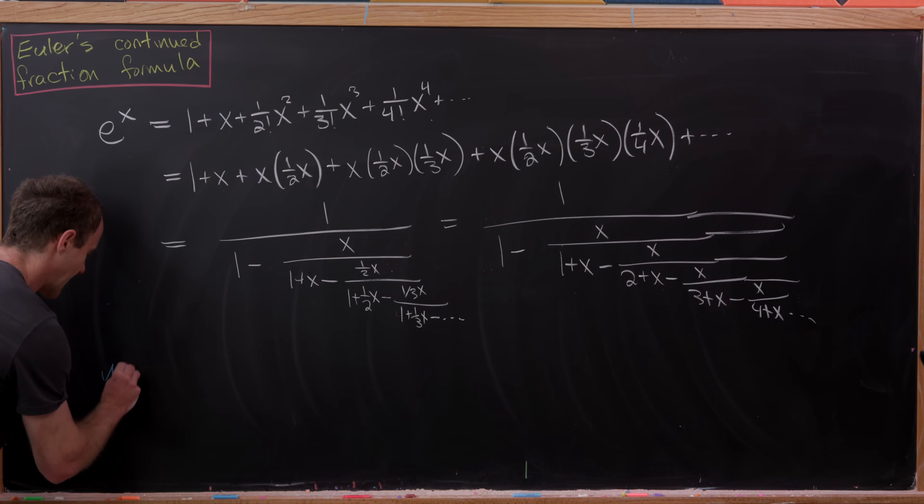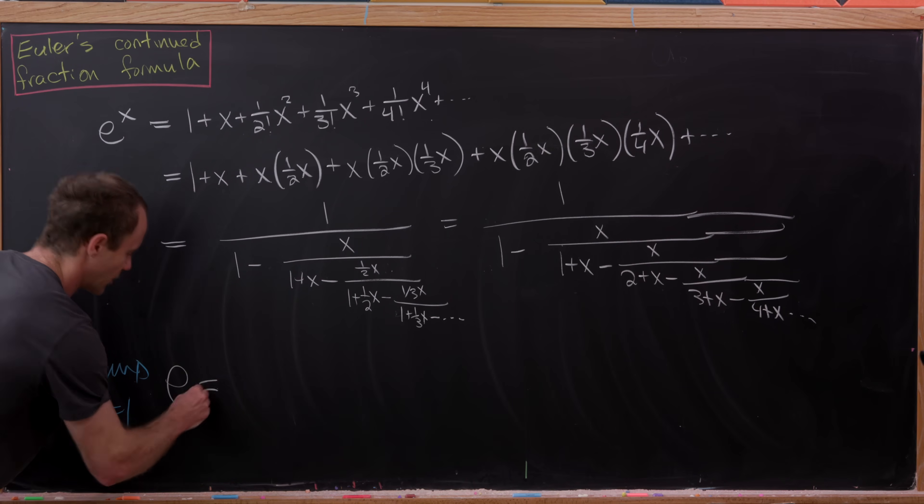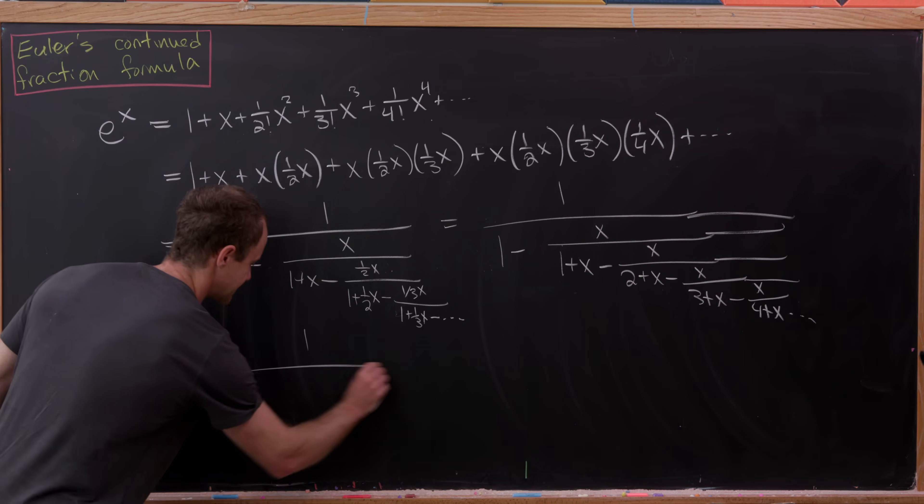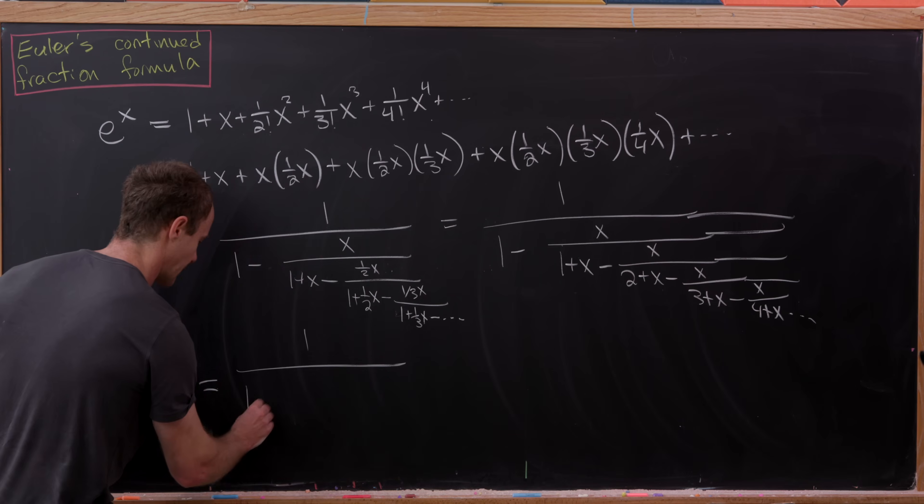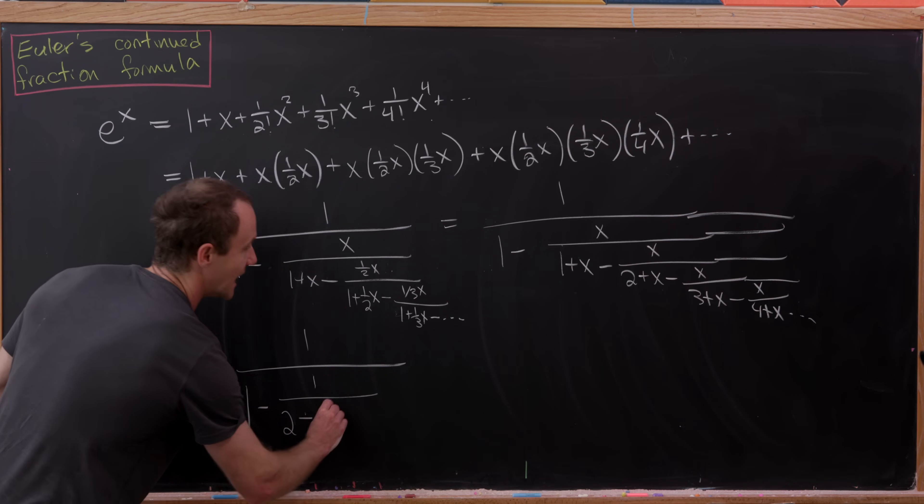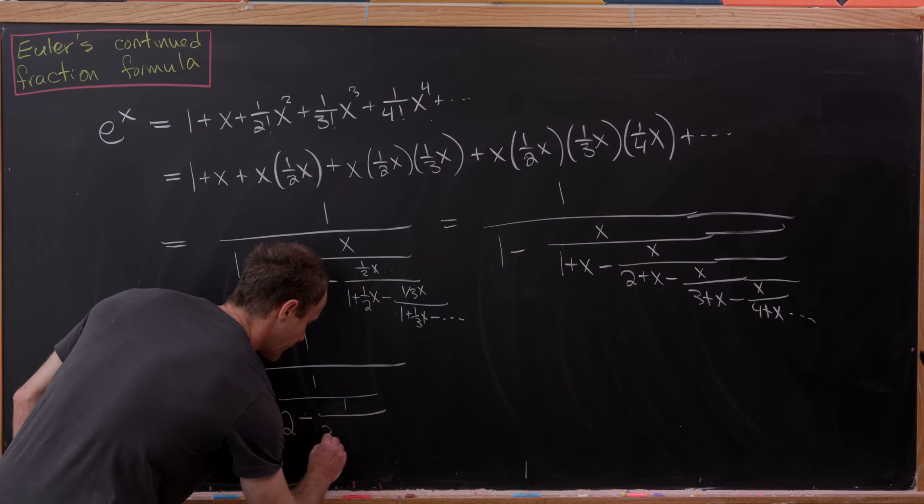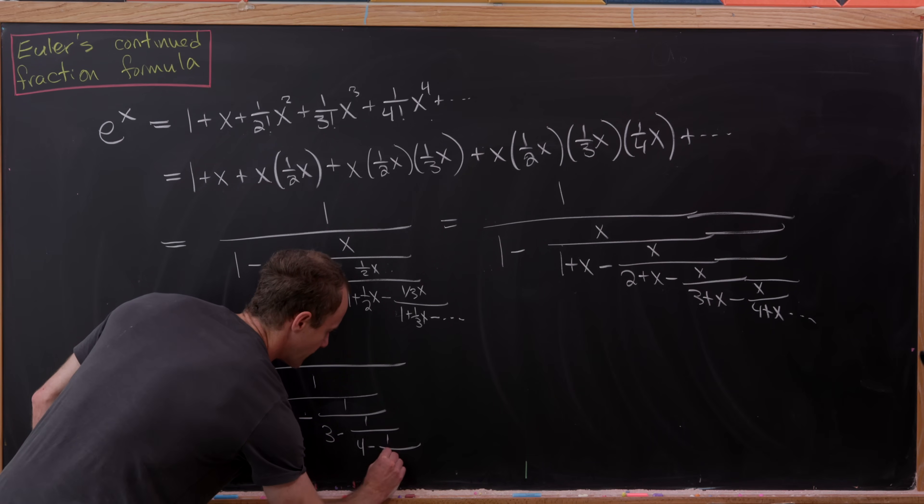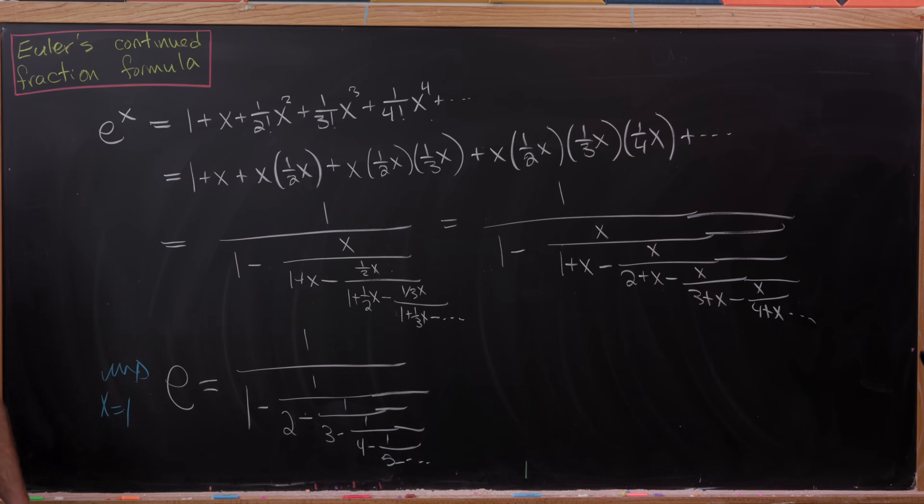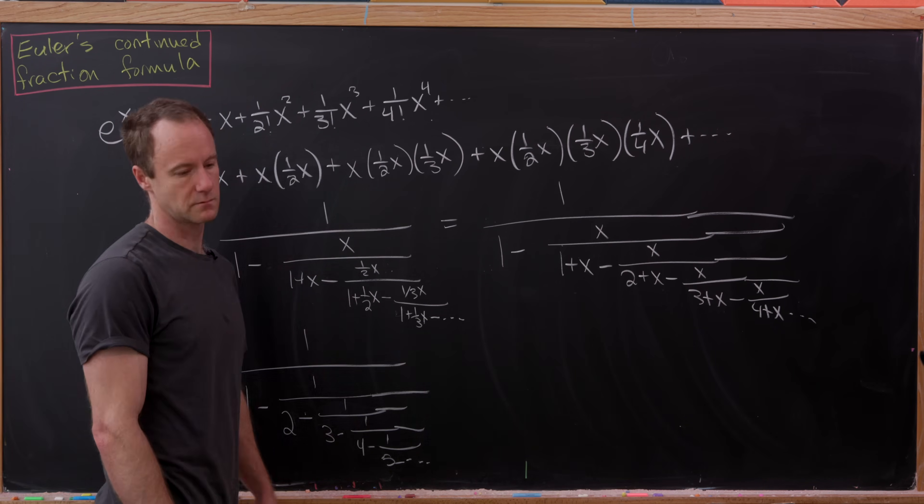So now maybe for the final result, let's set x equal to 1, and notice that we get the nice formula for e. So we'll have e is expressed as 1 over, let's see, we've got 1 minus 1 over 2 minus 1 over 3 minus 1 over 4 minus 1 over 5 minus, and so on and so forth. And I think that's got a real nice shape to it.